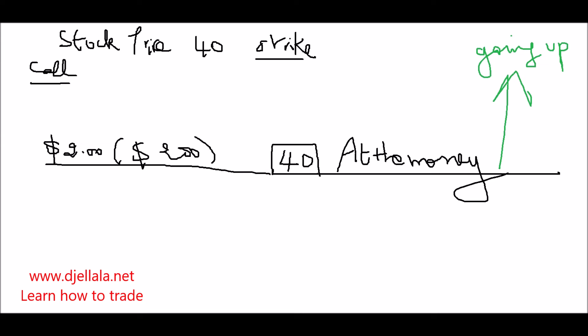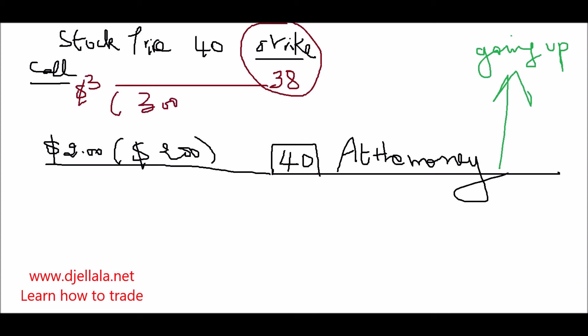In options you can also buy with a strike in the past. For example, if you want to buy at a $38 strike while the stock is at $40, the option might cost $3, so you pay $300. This is called 'in the money.' It means the option has intrinsic value — from $38 to $40 that's $2 of intrinsic value — plus extrinsic value, which is the time value.